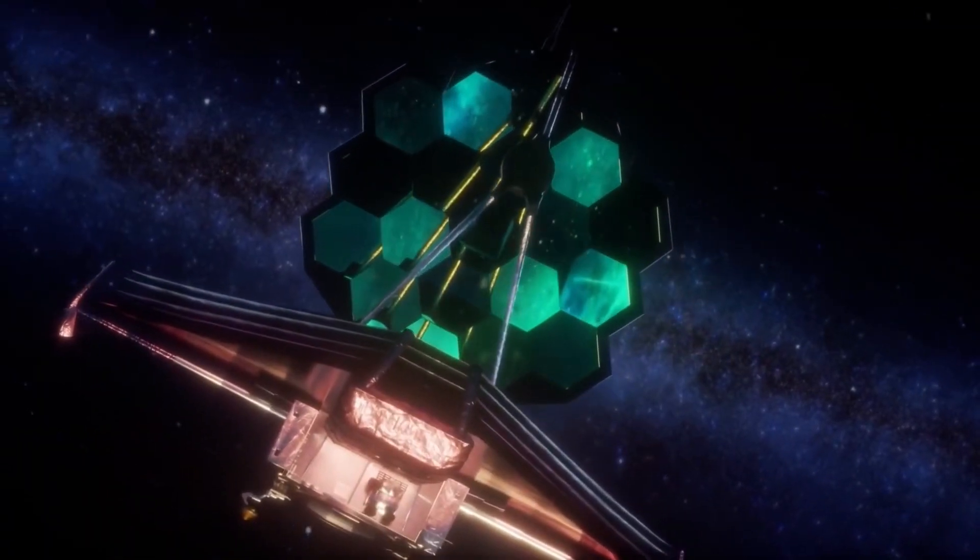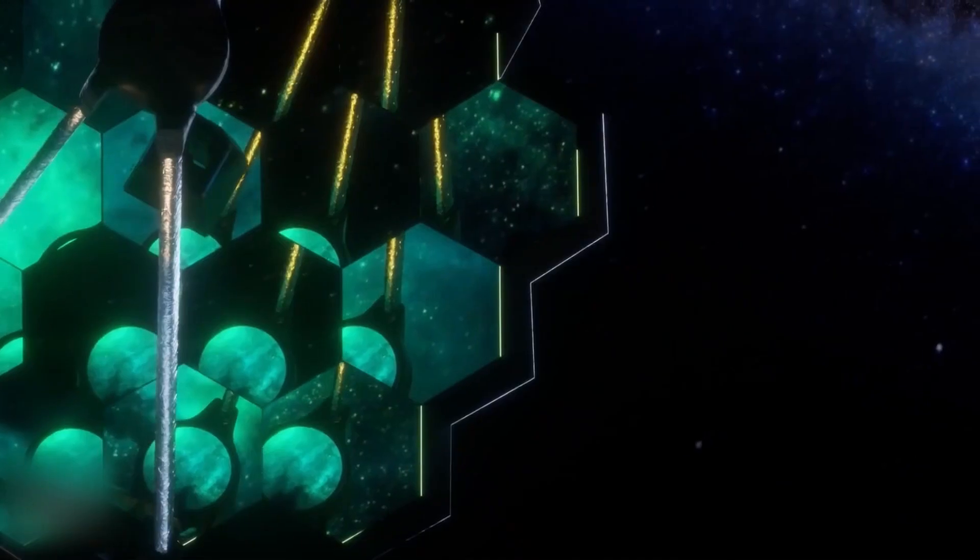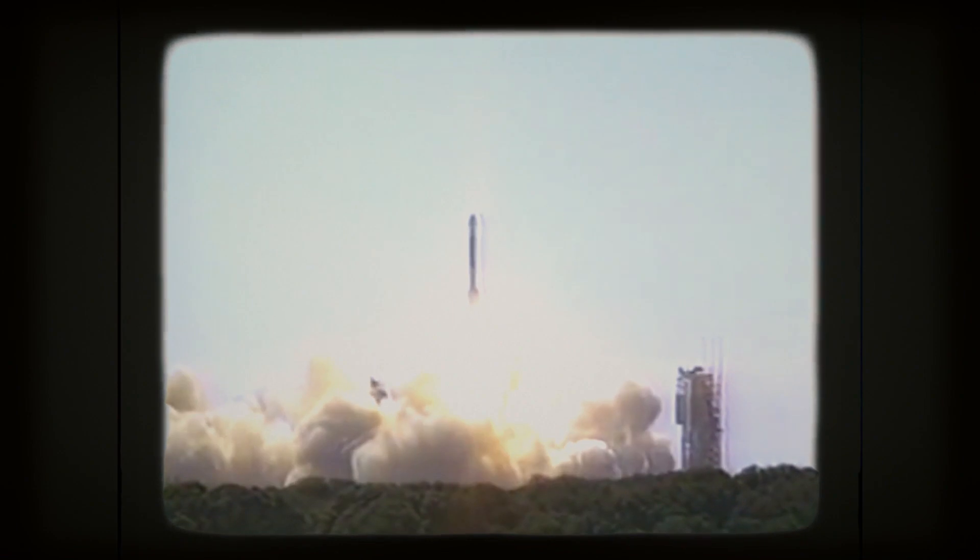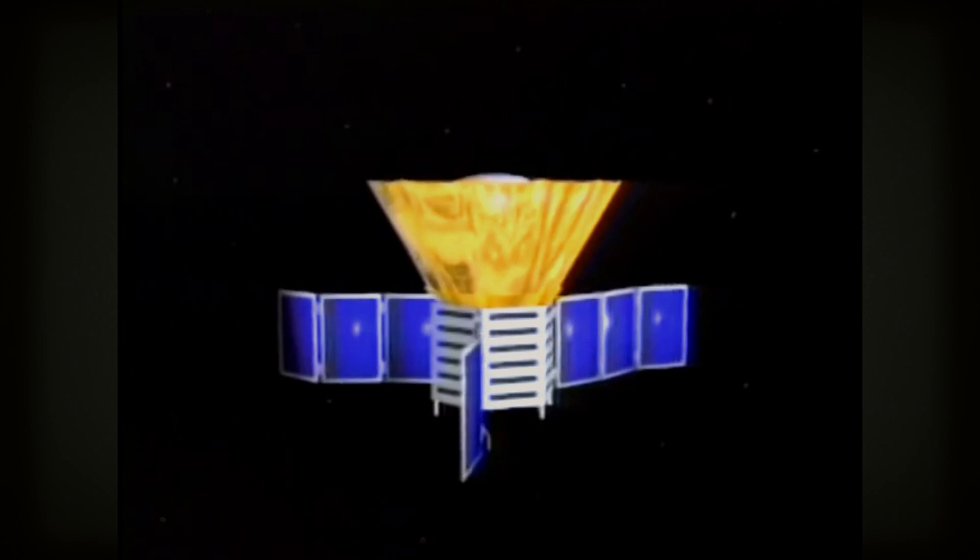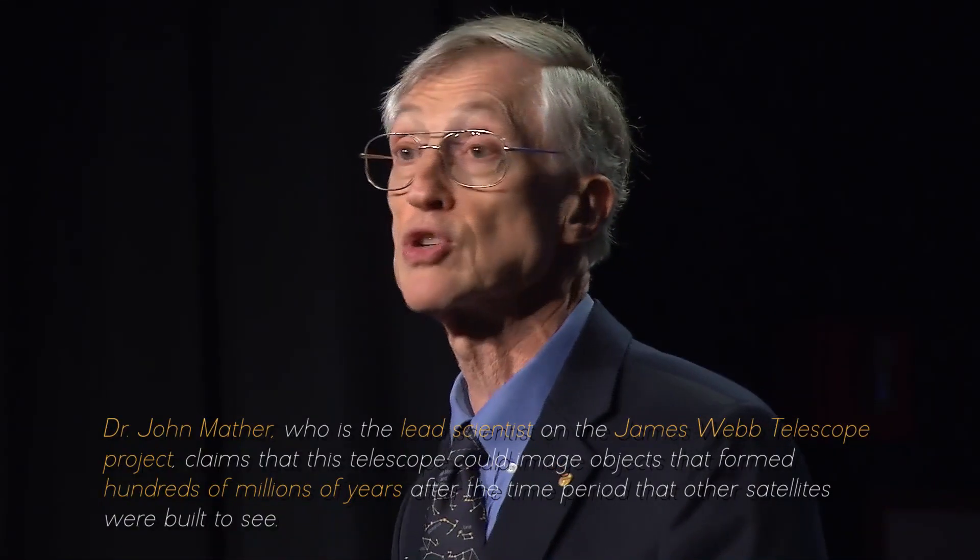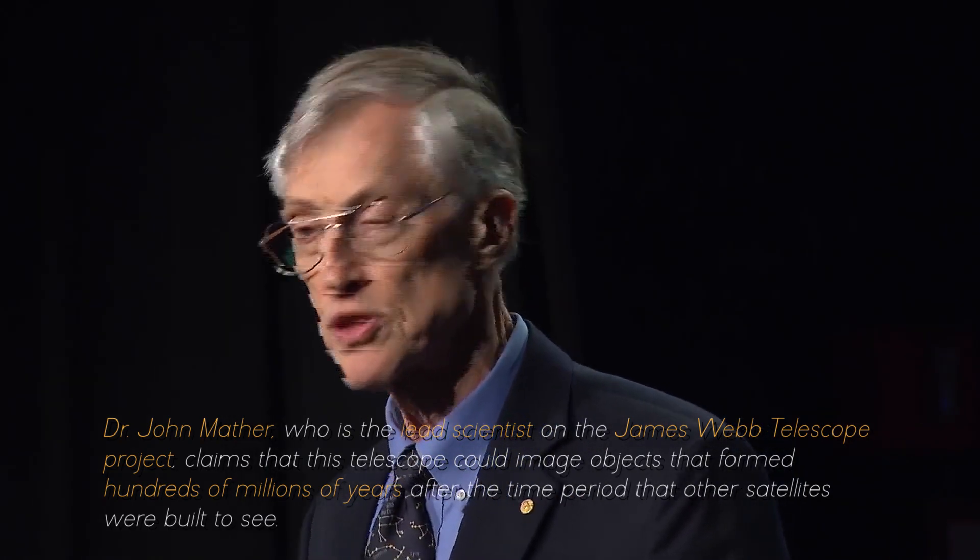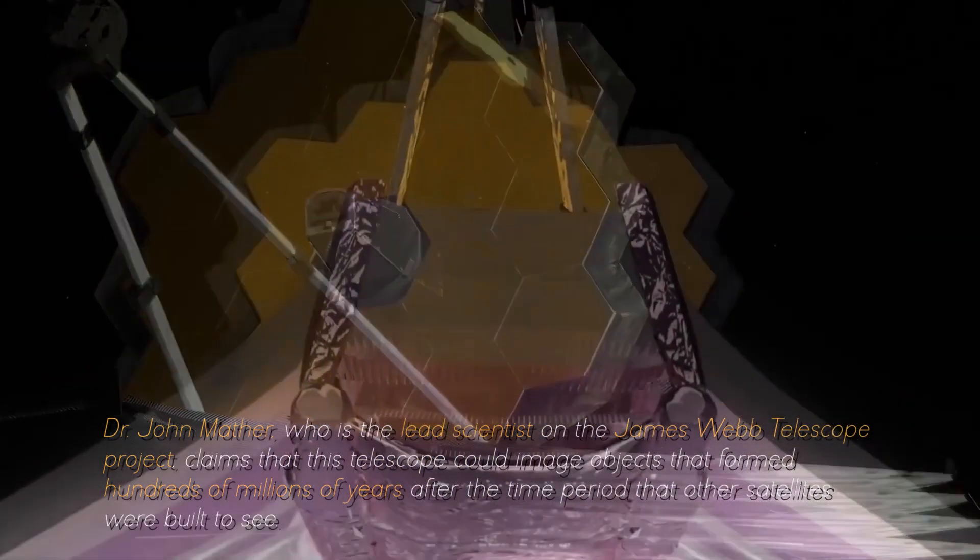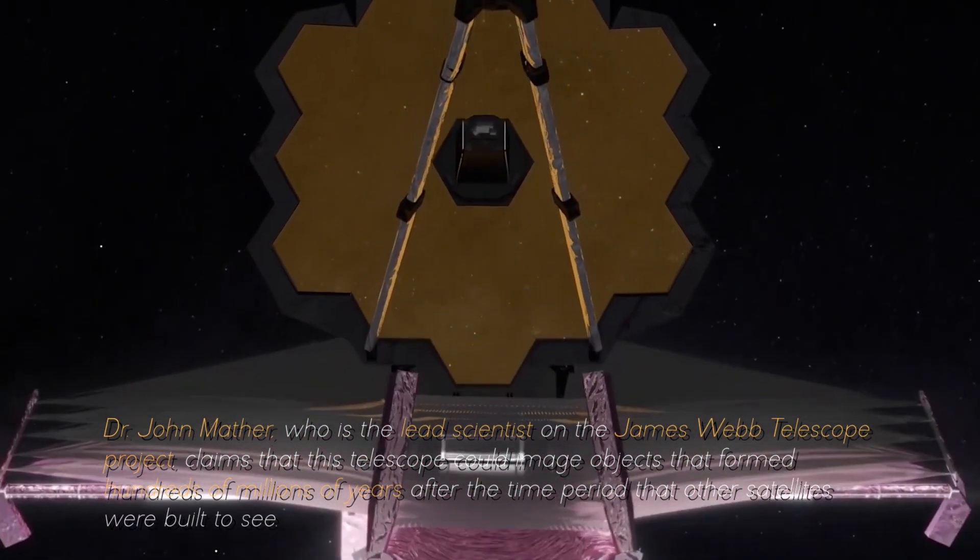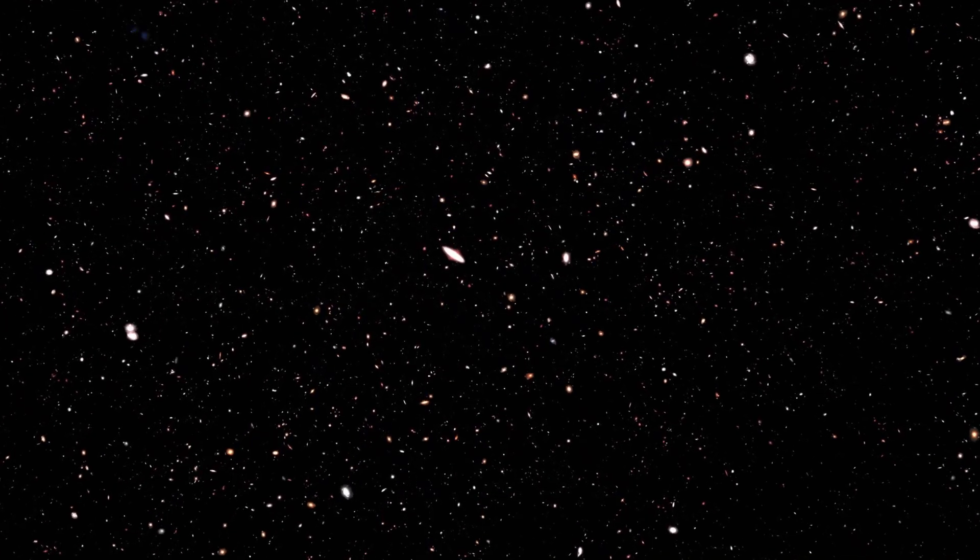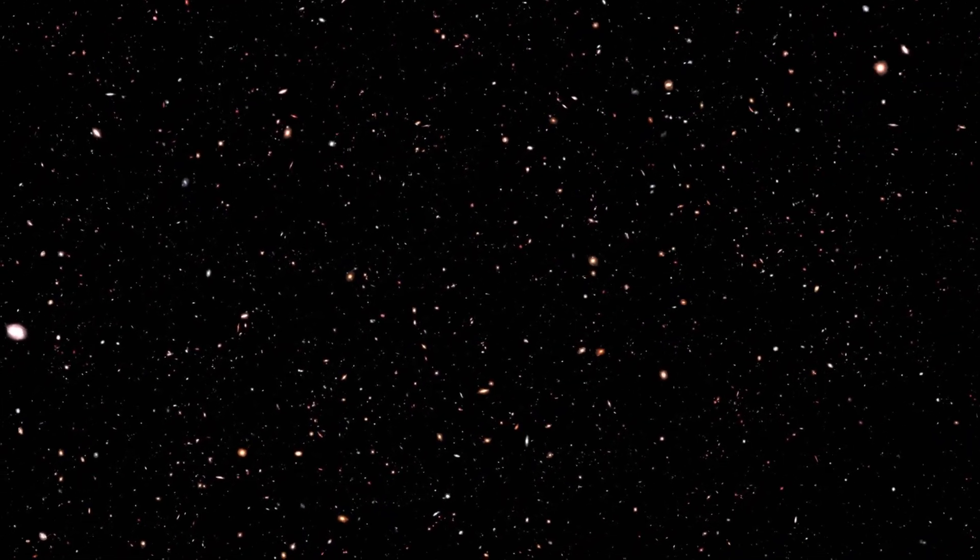The James Webb Space Telescope, designed to image the first objects that formed as the universe began to cool after the Big Bang, has seen further than previous telescopes. Dr. Mather, who is the lead scientist on the James Webb Telescope project, claims that this telescope could image objects that formed hundreds of millions of years after the time period that other satellites were built to see. The small changes in temperature observed by those satellites may have been the seeds that eventually became new galaxies.